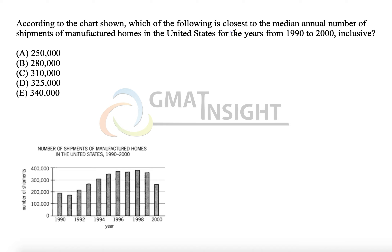According to the chart shown, which of the following is the closest to the median annual number of shipments of manufactured homes in the United States for the years 1990 to 2000 inclusive. This inclusive confirms that we have 11 years, which means we have 11 bars in this bar graph.